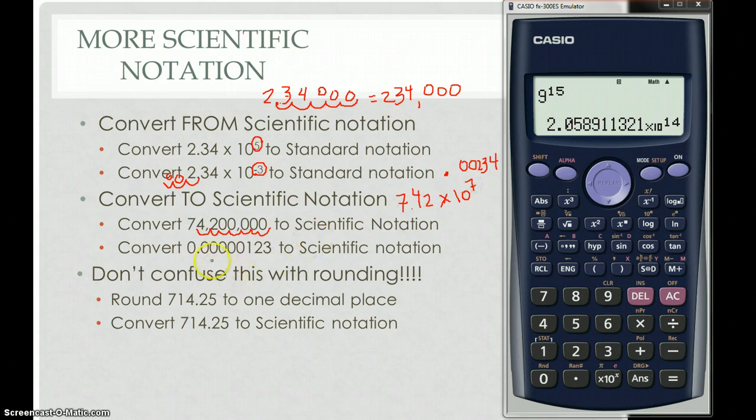The next one already has a decimal point. It's a very small number that I'm going to make bigger by moving the decimal. 1, 2, 3, 4, 5, 6. I want a number between 1 and 10. So this is 1.23 times 10. Now, this time it's a negative exponent because I took a really small number and I turned it into a number between 1 and 10. So it's a negative 6.